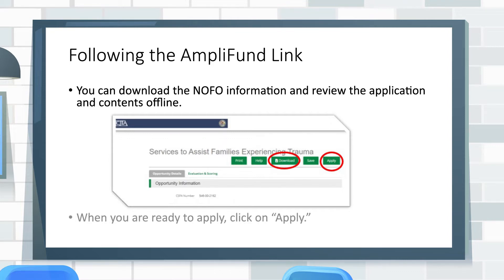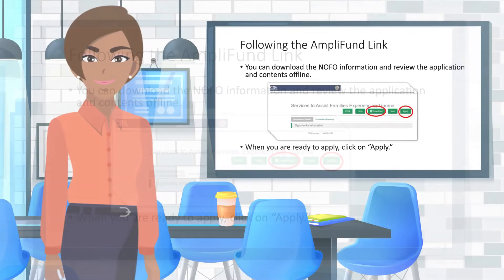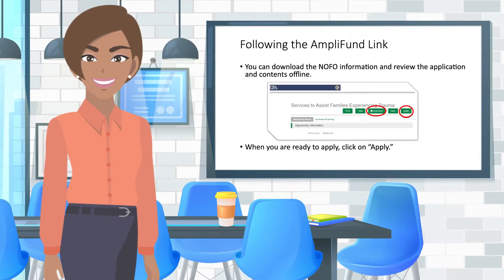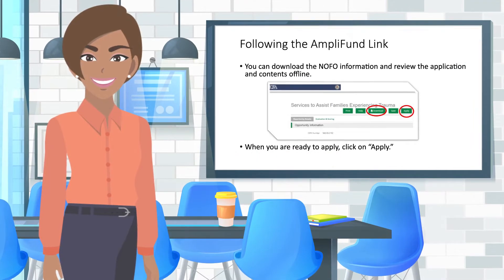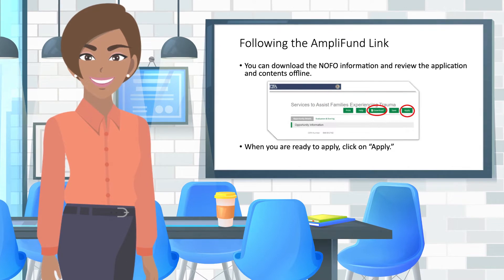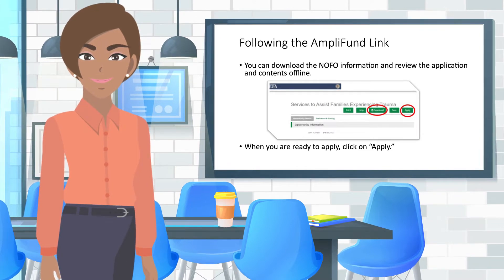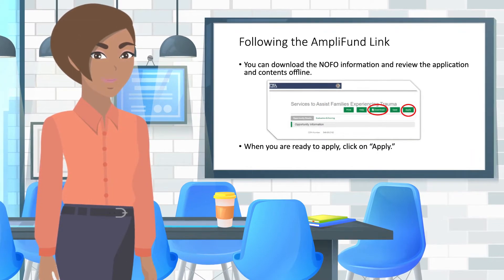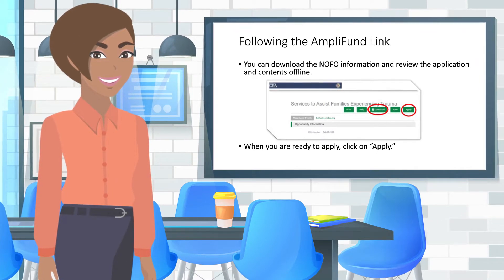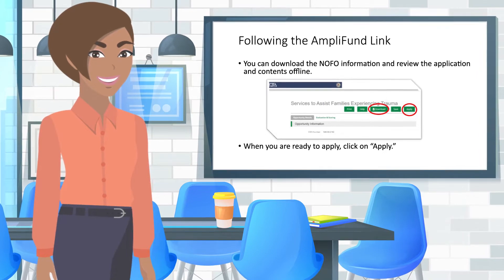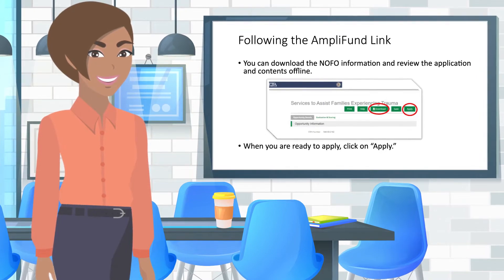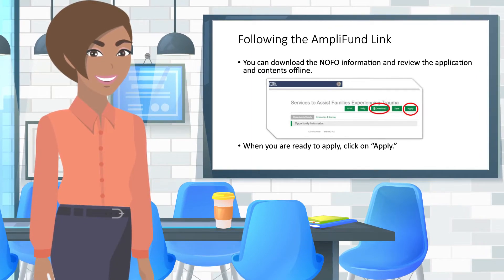When your organization is ready to apply, follow the Notice of Funding Opportunity link and click on Apply. The Apply button takes you to the login page reviewed in Module 1, where you enter the username with the public.external.illinois.gov extension and password.